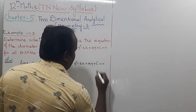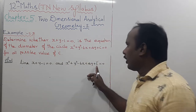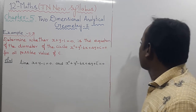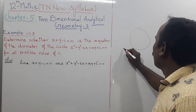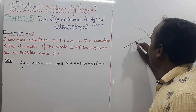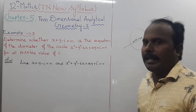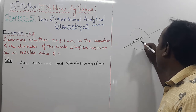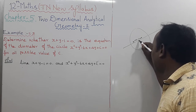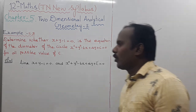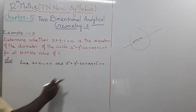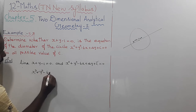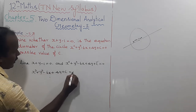To find the possible values of c, we need to consider the circle and draw the line x plus y minus 1 equals 0. For the line to be a diameter, it must pass through the center. So first, we find the center from the equation x squared plus y squared minus 6x plus 4y plus c equals 0.